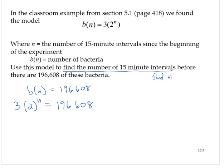We need to solve for n. To do this, I'm going to make this equation look like 2^n equals something. In this case, I'll just divide by 3. Dividing both sides by 3 gives us 2^n = 65,536.